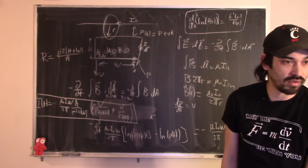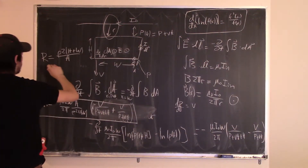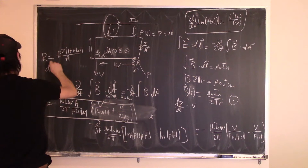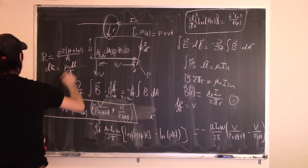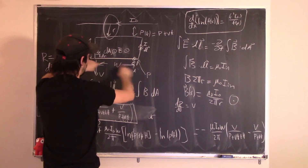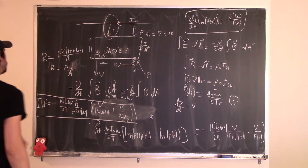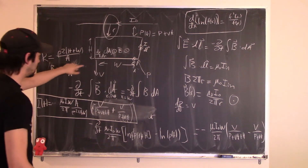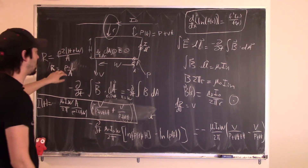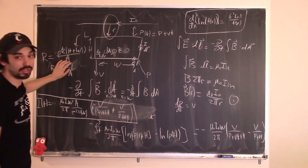A student asks for the resistance explained again. In general, dR equals rho dL over A. For current flowing through the wire — not radially outward — this says R equals rho times L over A. So the total resistance is resistivity times the total length the current flows through divided by the cross-sectional area of the loop of wire.